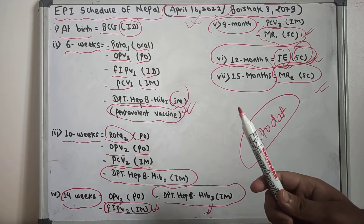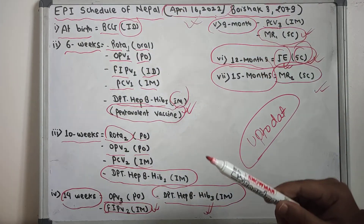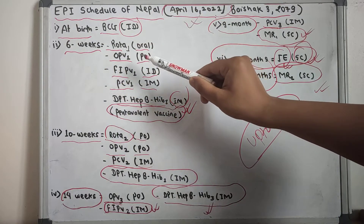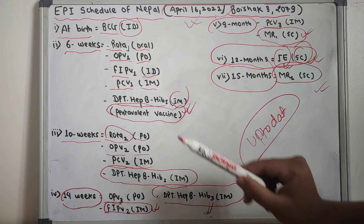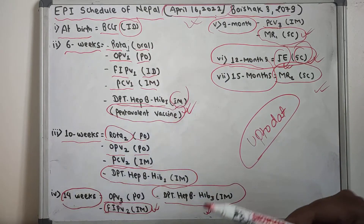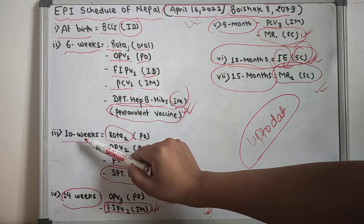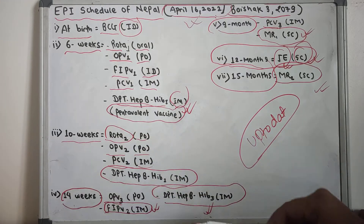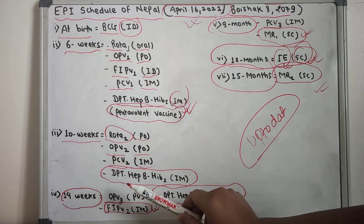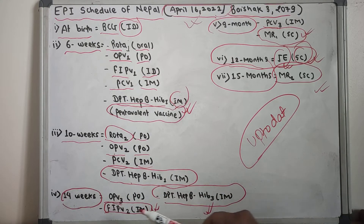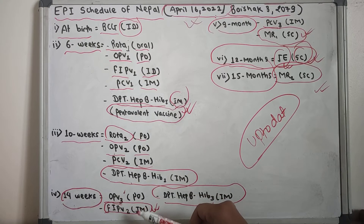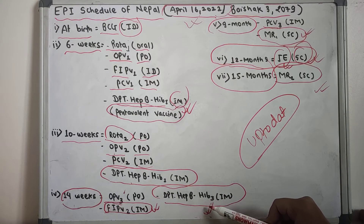To revise: at birth, BCG is given. After six weeks — first dose of Rota, first dose of OPV, first dose of fIPV, first dose of PCV, and first dose of Pentavalent vaccine. After 10 weeks — second dose of Rota, second dose of OPV, second dose of PCV, and second dose of Pentavalent vaccine. After 14 weeks — third dose of OPV, second dose of fIPV, and third dose of Pentavalent vaccine.